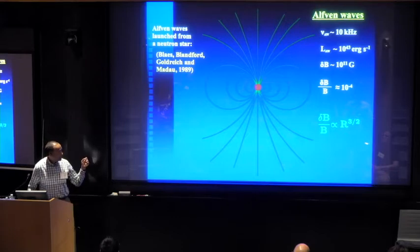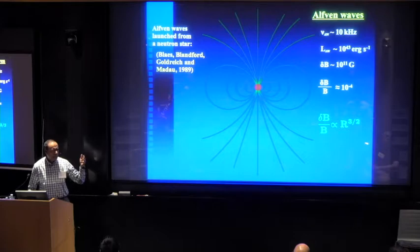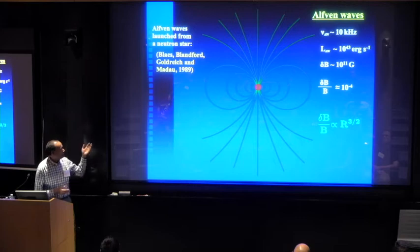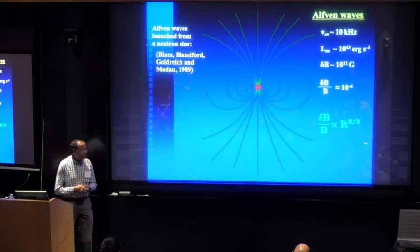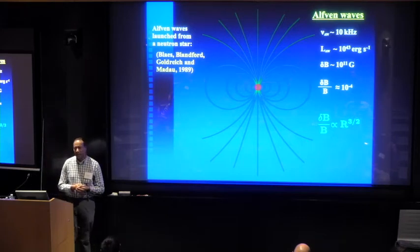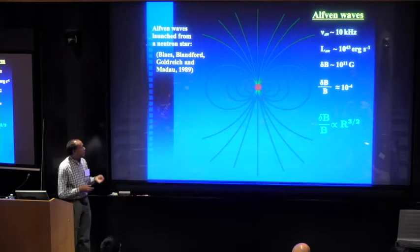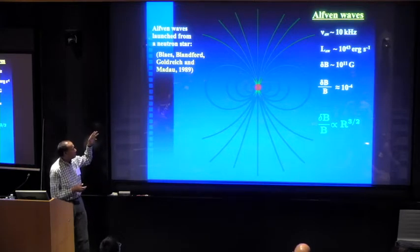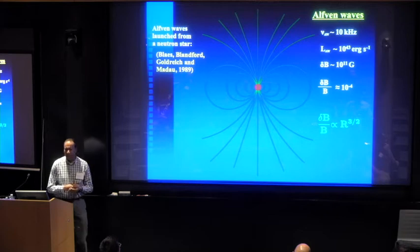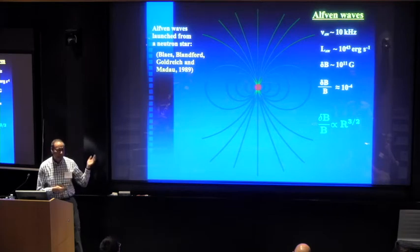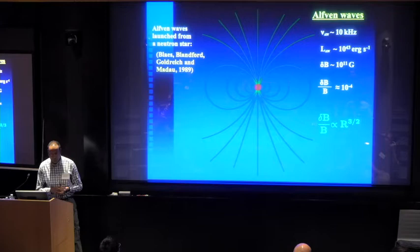So the model is this: you have an Alfvén wave. Some magnetic disturbance could be an Alfvén wave that is launched at a frequency of a few tens of kilohertz from the surface of the neutron star. Now this is something that was considered three decades ago by Blaes, Blandford, Goldreich, and Madau, but in a very different context.